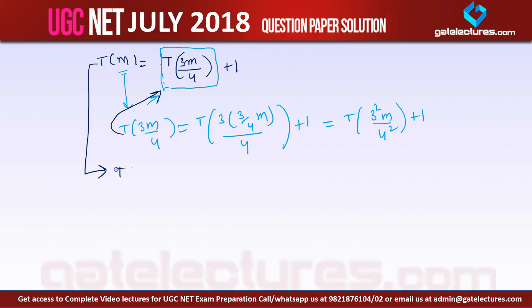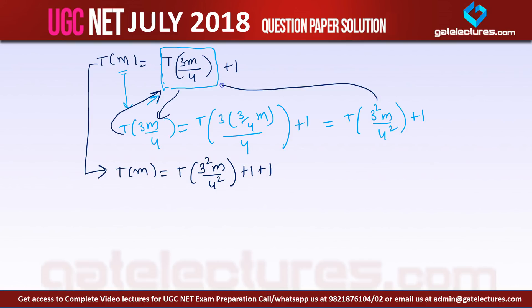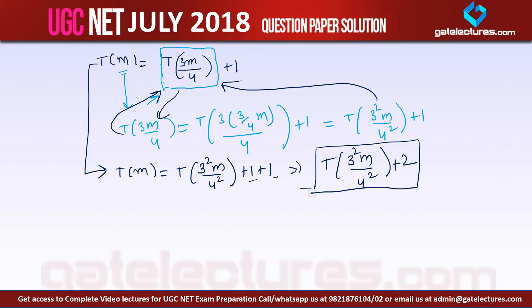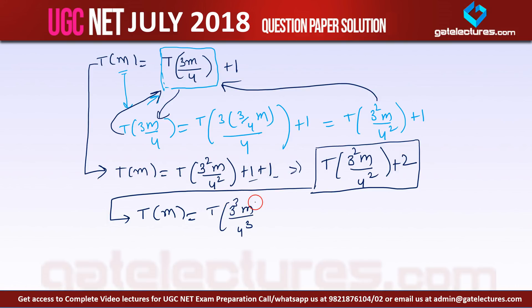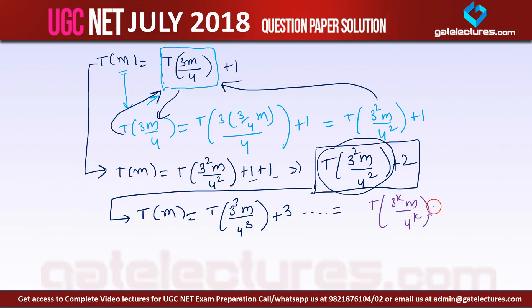Substituting back, T(m) = T(3²m/4²) + 1 + 1 = T(3²m/4²) + 2. Extending one more step gives T(m) = T(3³m/4³) + 3. If we extend this to the k-th step, the pattern becomes T(m) = T(3^k · m / 4^k) + k.